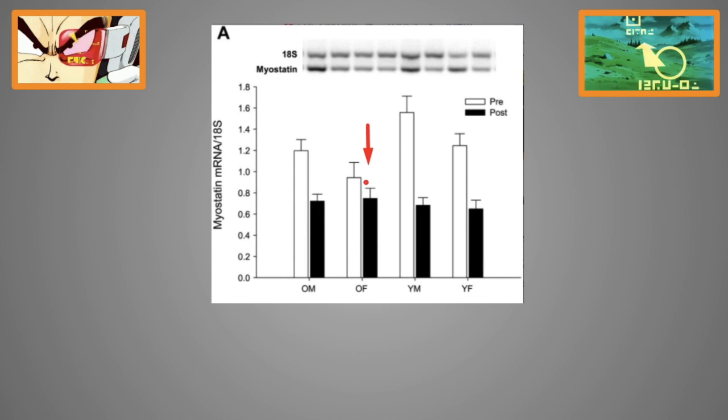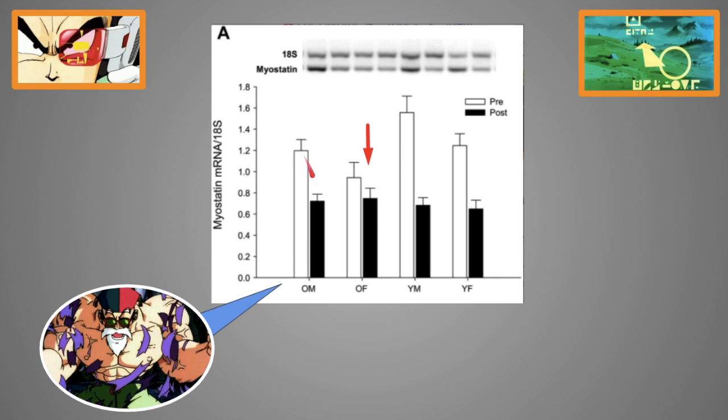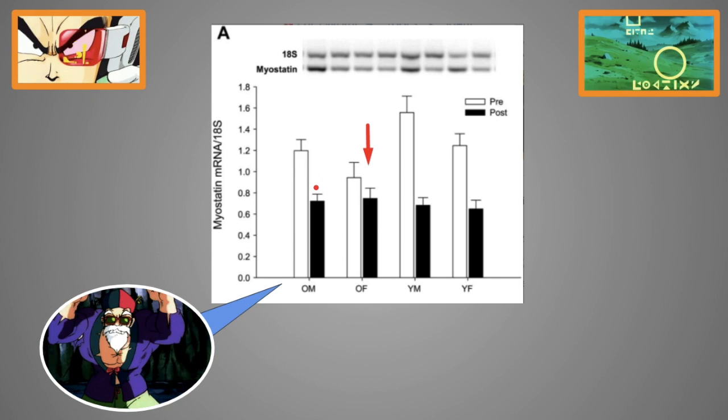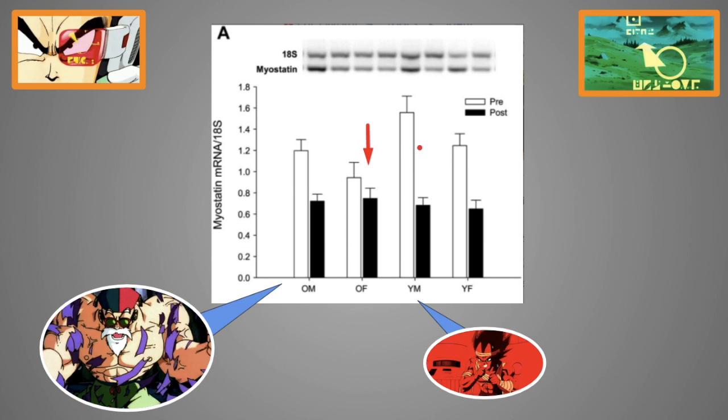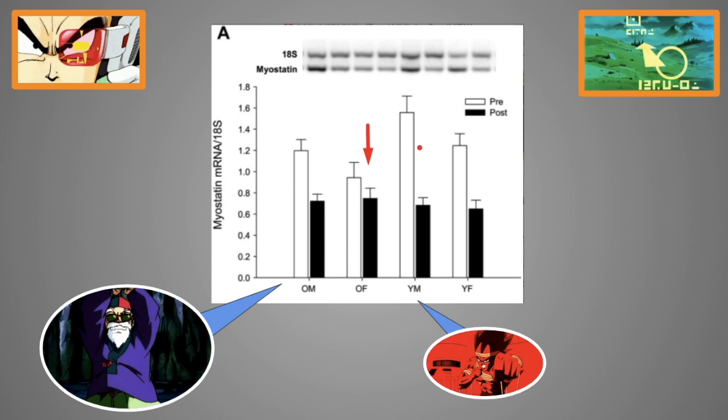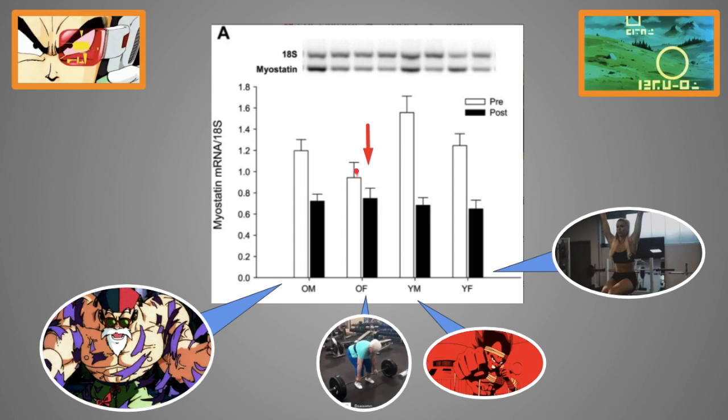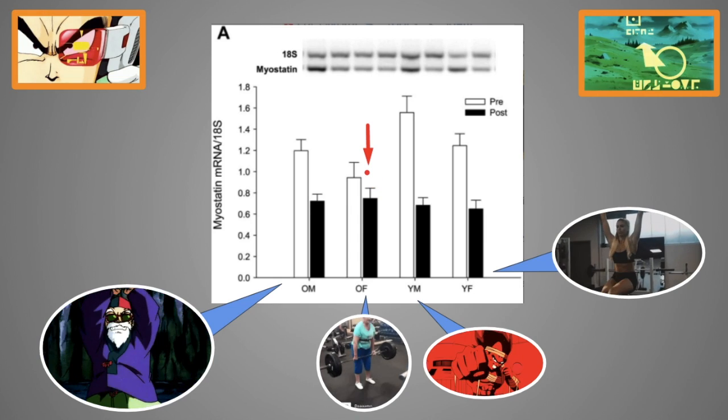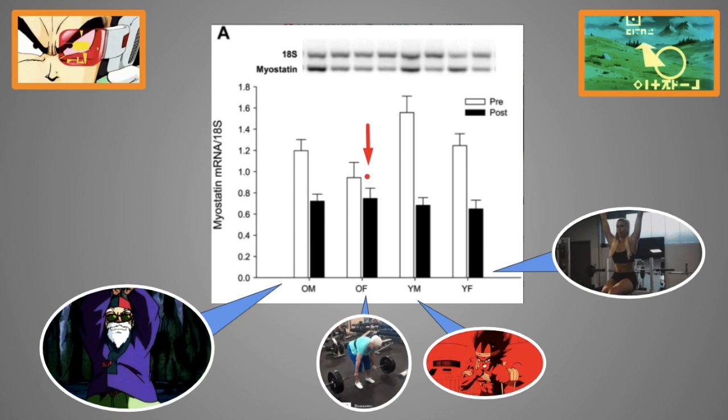Myostatin is also the reason why old women have a very hard time putting on muscle. Old women are the most anabolic resistant people on the planet. As you can see here, after training, old men have a decent reduction in myostatin, which allows them to put on muscle. Young men have the biggest drop in myostatin, which once again explains why it is so easy for young men to put on muscle. Young women have a decent drop in myostatin. And obviously, old women have a very hard time dropping myostatin, even after they lift weights, which is why they have anabolic resistance.